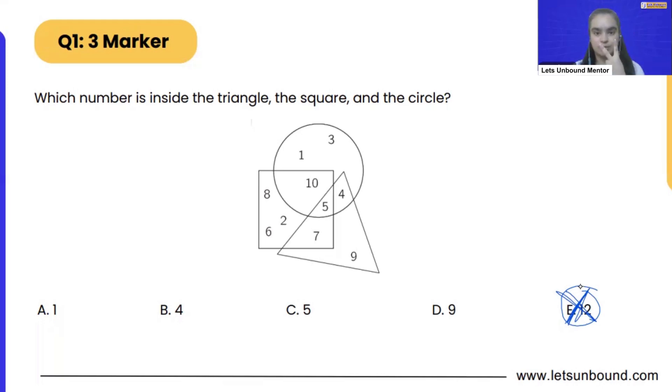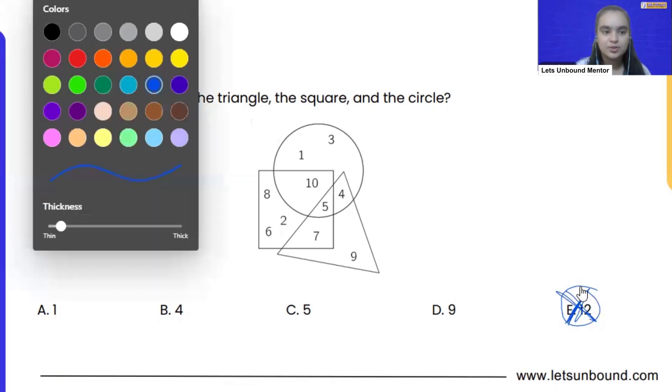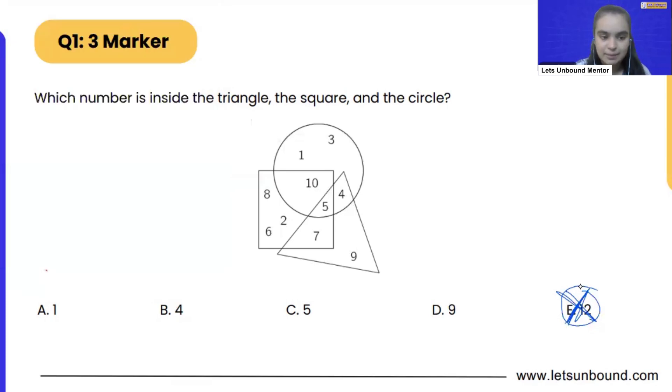So what you can do, there are two ways of doing this. One way is check all the options which you can see. For example, if you will see number 1, number 1 is here which is only in circle. Square is not there or triangle is not there. So that means option 1 is not correct.